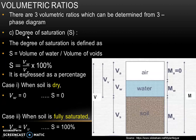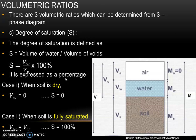The third volumetric ratio is degree of saturation. It is defined as the ratio of volume of water to volume of voids. Here, volume of water is represented by VW and volume of voids is represented by VV. So S is equal to VW divided by VV, multiplied by 100 percent, and this is also expressed as a percentage.